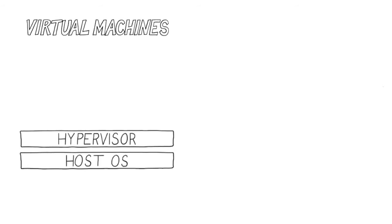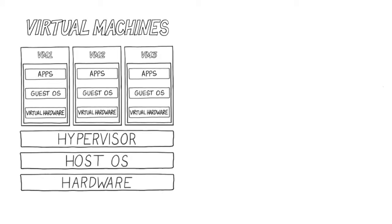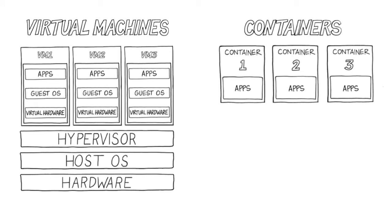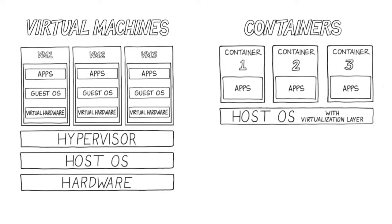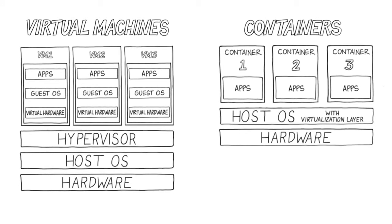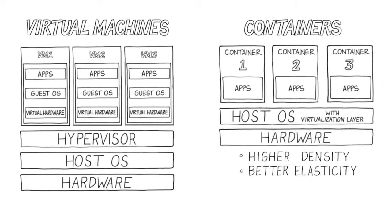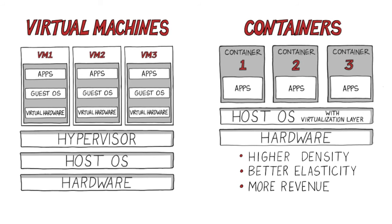Virtual machines use a hypervisor to virtualize hardware infrastructure, whereas containers virtualize a host operating system on top of that infrastructure, allowing them to support higher density, better elasticity, and more revenue per virtual private server than virtual machines.